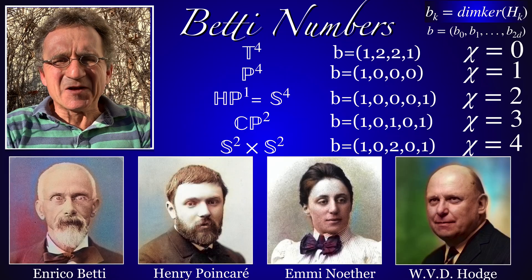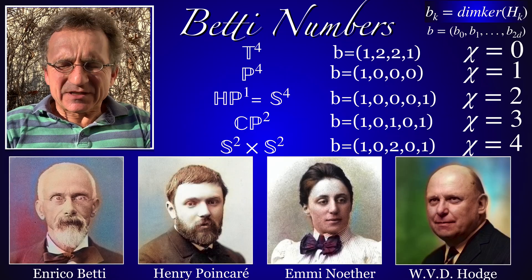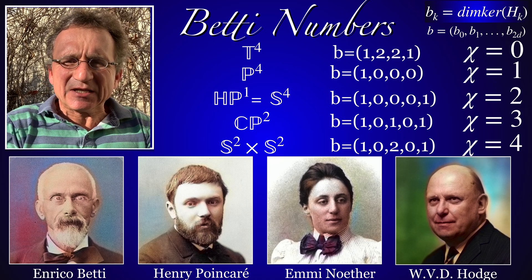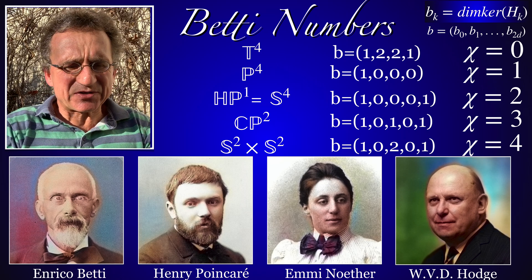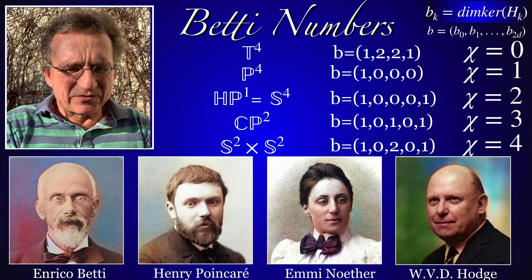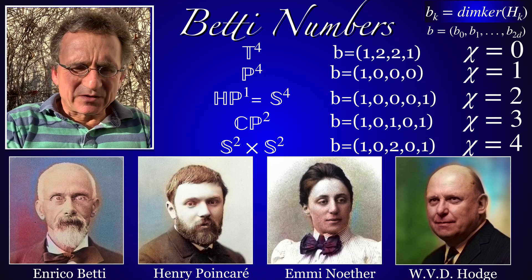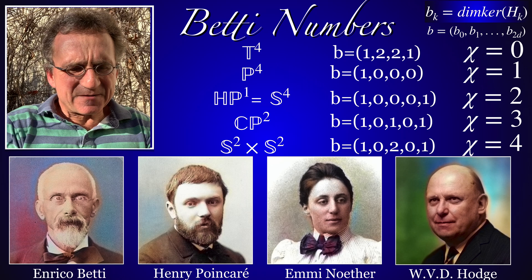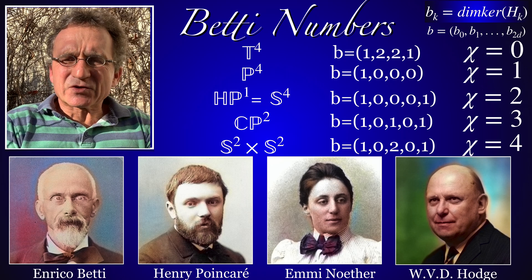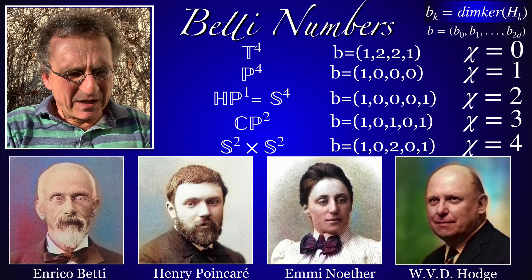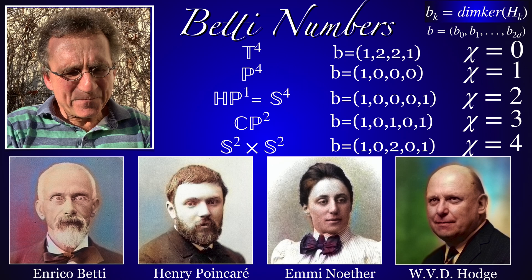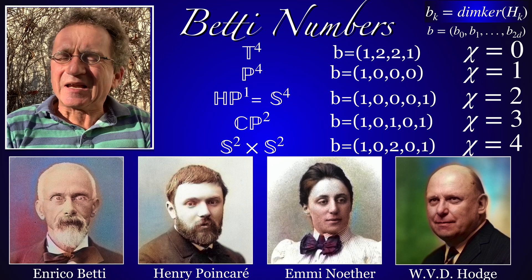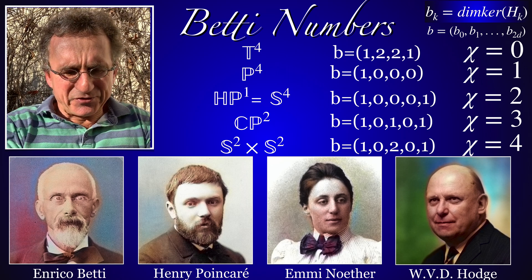Another approach to the Hopf conjectures is to look at the Betti numbers or bounds on the Betti numbers. One can compute the Betti numbers for known examples, like the torus, the four-dimensional projective space, the V4 sphere, the two-dimensional projective plane, or S² × S². This is the algebraic topology approach.